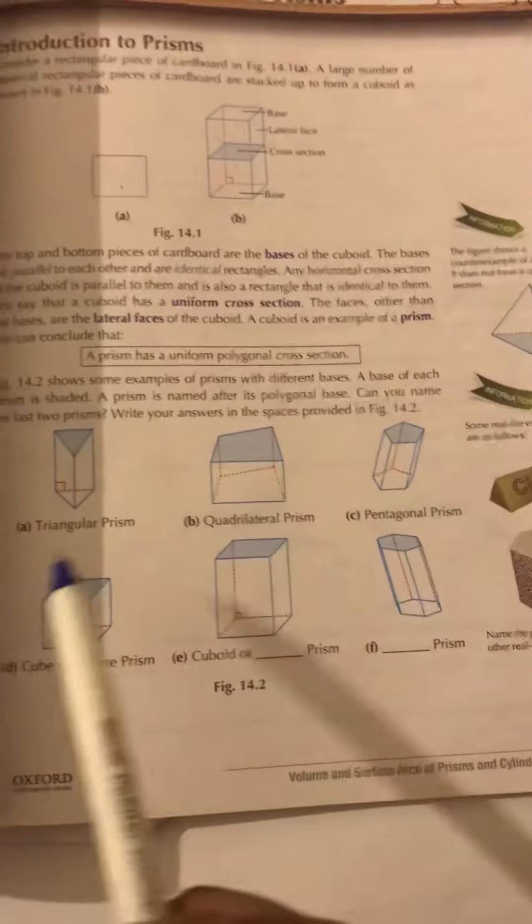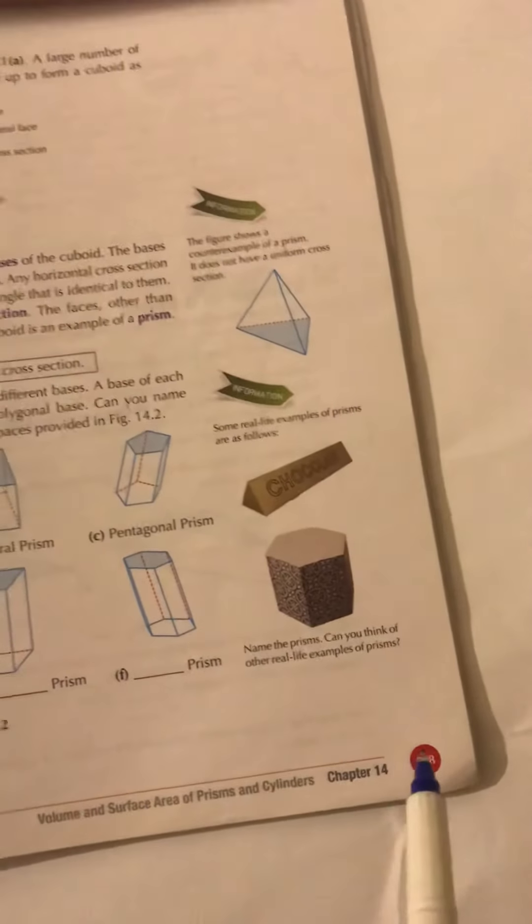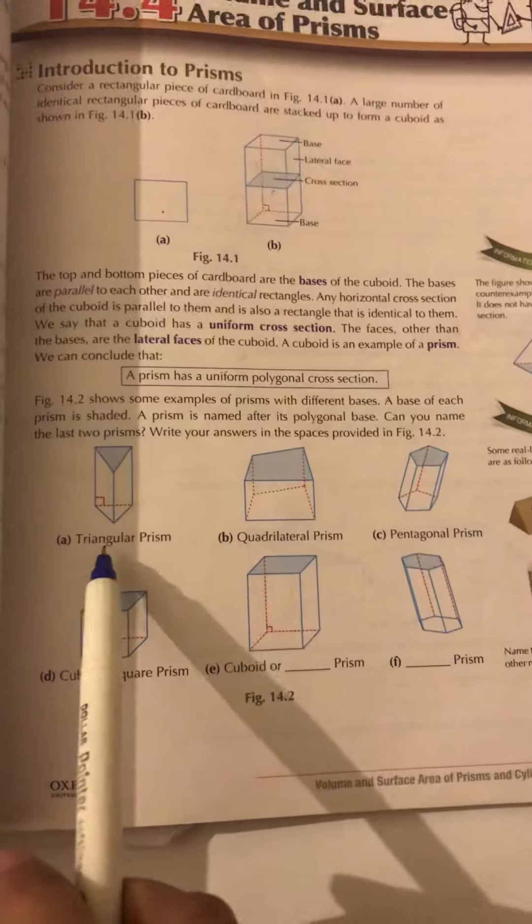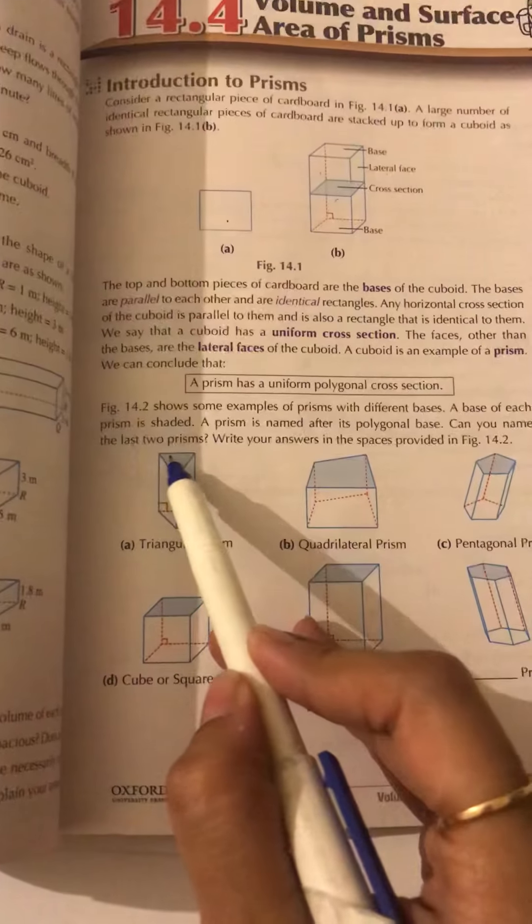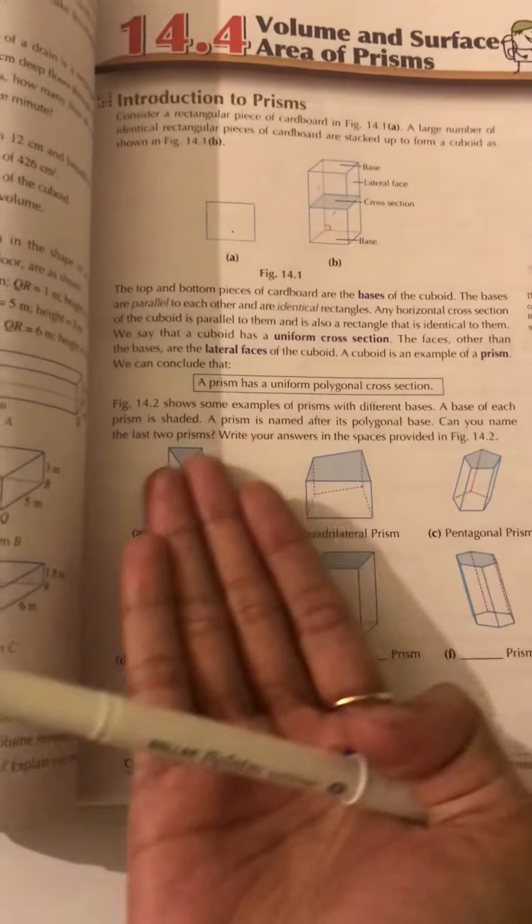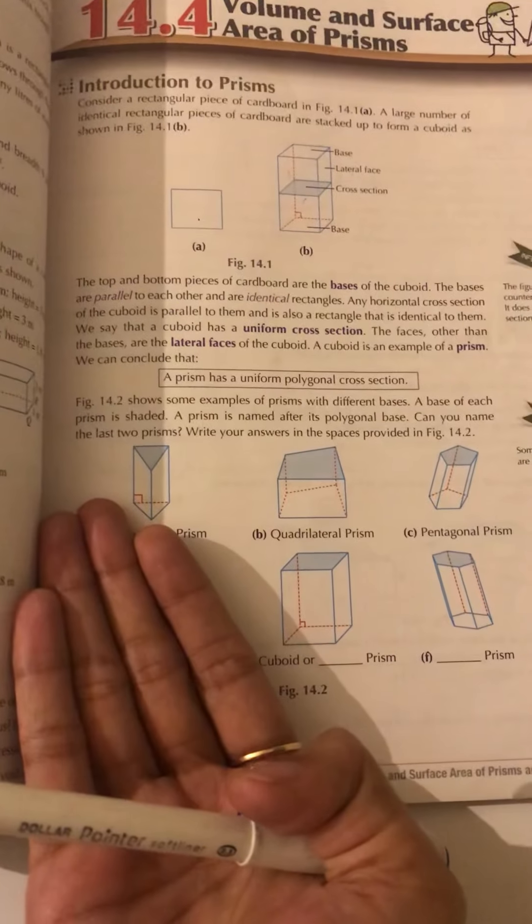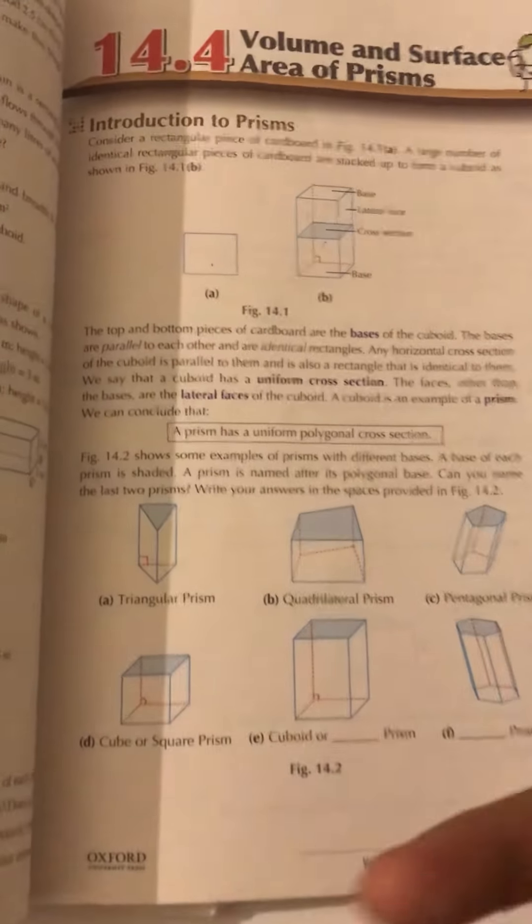So now let's see how many types of prisms are there present in the book. This is page number 348. Triangular prism - why is it a triangular prism? Because the base of the prism is a triangle and if you will cut or cross section it into half, the same shape of triangle will appear.